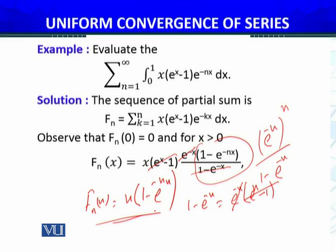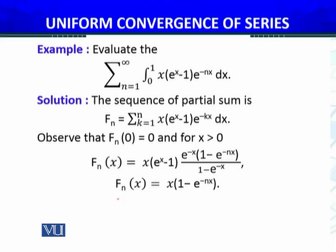So we have observed the sequence of partial sum in compact form: f_n(x) = x · (1 - e^(-nx)). Furthermore, f_n(0) = 0 because of the x factor. And for x > 0, this sequence of partial sum becomes f_n(x) = x · (1 - e^(-nx)).